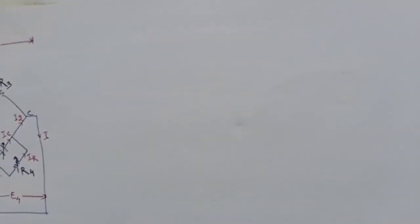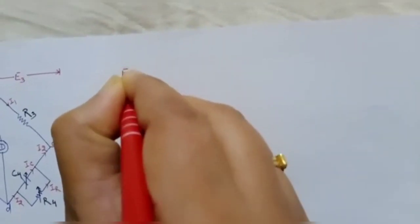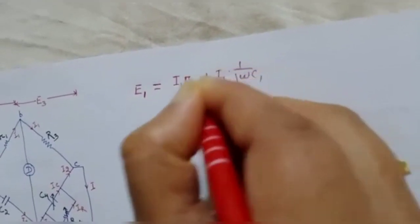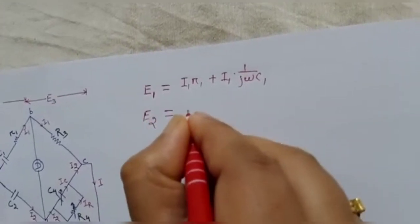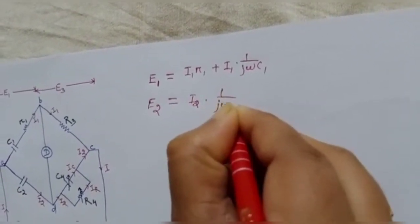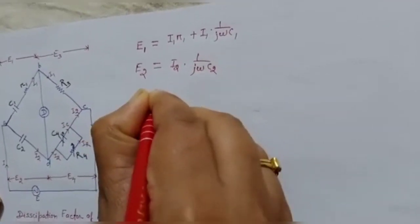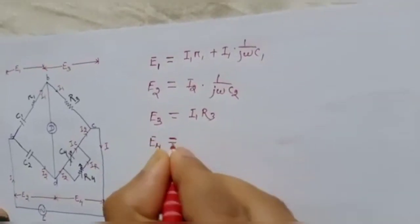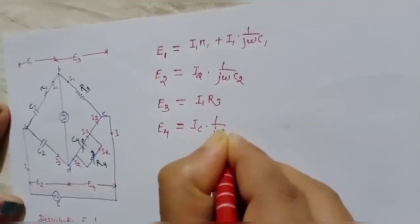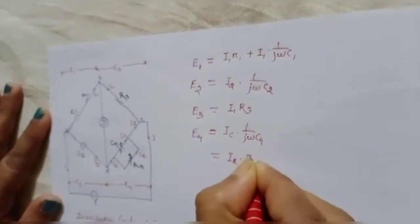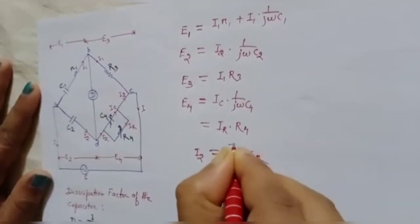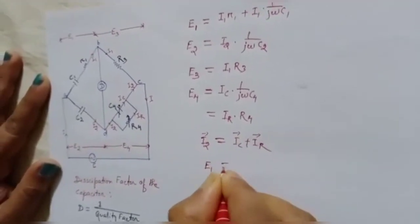Next we have to draw the phasor diagram of this bridge. For that, let's write down the voltage and current equations. E1 equals I1·R1 plus I1·(1/jωC1). E2 equals I2·(1/jωC2). E3 equals I1·R3. E4 has two parallel branches: IC·(1/jωC4) and IR·R4. Also, I2 equals the phasor sum of IC and IR.